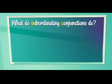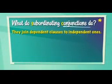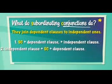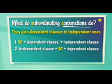So what do subordinating conjunctions do? They join dependent clauses to independent ones. For example: a subordinating conjunction plus dependent clause, comma, plus independent clause. Or it could be independent clause plus subordinating conjunction plus dependent clause. Please notice that the subordinating conjunction goes before the dependent clause.